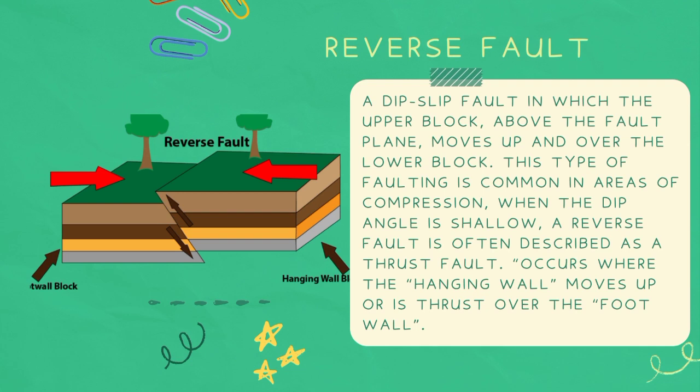Reverse fault — a dip-slip fault in which the upper block, above the fault plane, moves up and over the lower block. This type of faulting is common in areas of compression. When the dip angle is shallow, a reverse fault is often described as a thrust fault. It occurs where the hanging wall moves up, or is thrust over, the foot wall.